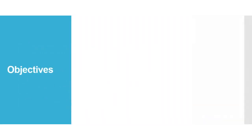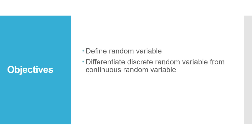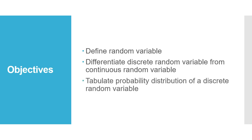So our objectives for this evening are: first, define random variable; second, differentiate discrete random variable from continuous random variable; and then third, tabulate probability distribution of a discrete random variable.